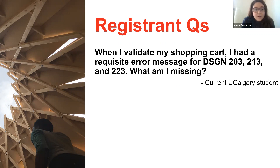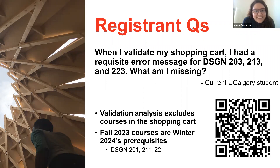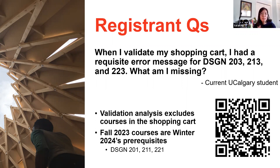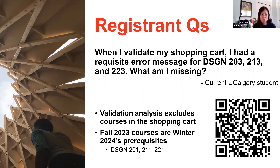The next question: when I validate my shopping cart, I get a requisite error message for Design 203, 213 and 223 — what am I missing? The QR code shows how shopping cart validation works. Basically, the validation only considers courses you've currently completed or are currently enrolled in. For all incoming students, your Design 201, 211 and 221 are sitting in your fall shopping cart, and the winter prerequisites are those three fall courses. You'll get a requisite error because it doesn't pick up courses in your cart itself. This error should go away once you properly enroll — it will then recognize your fall courses as registered. If you still get a requisite error after enrolling in both fall and winter, that's when you want to reach out to me.